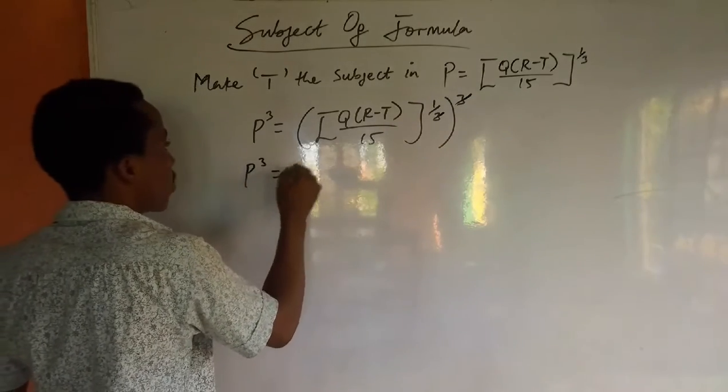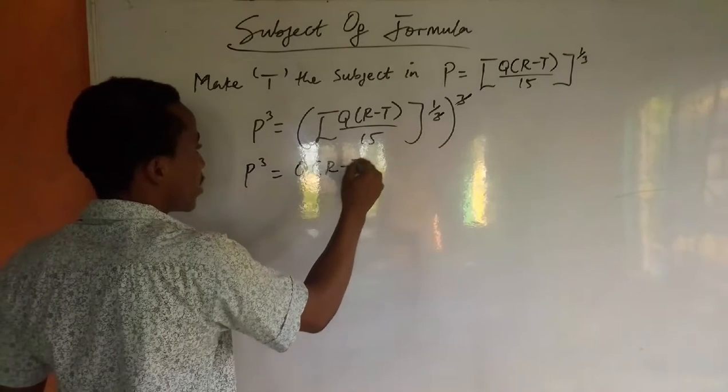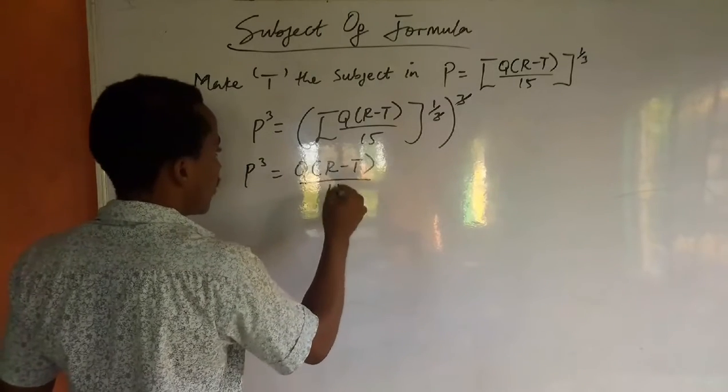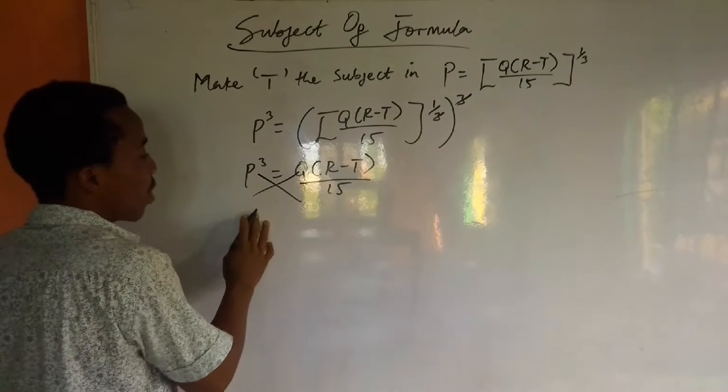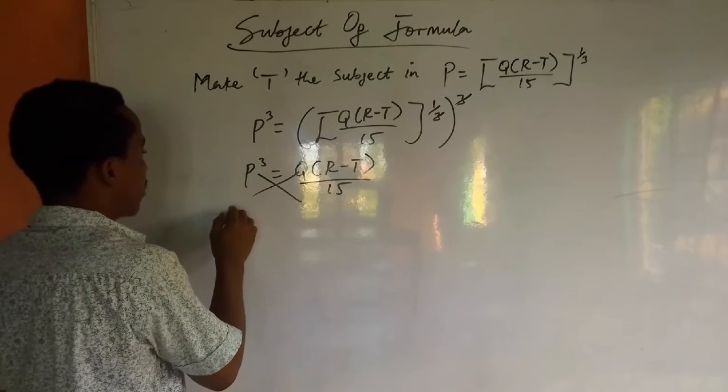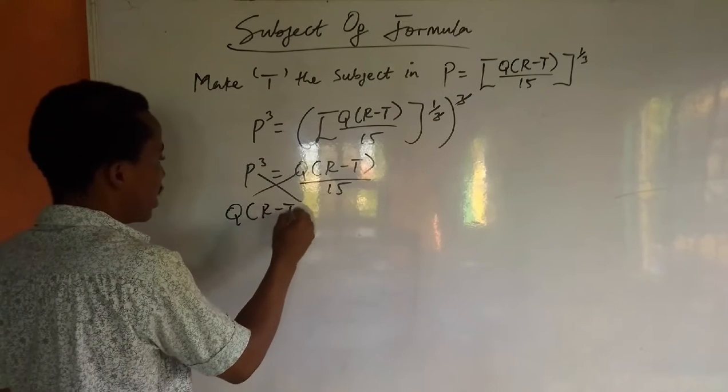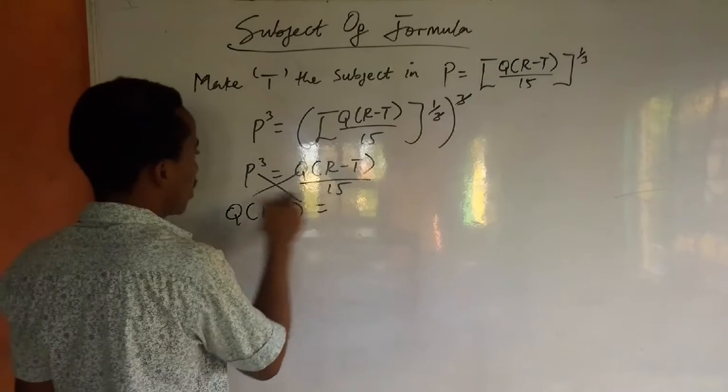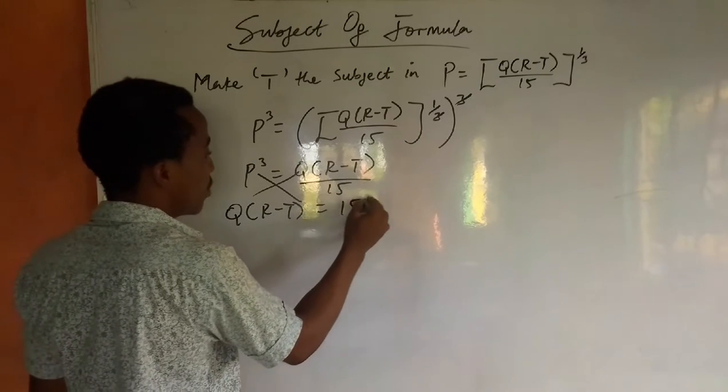And P³ will be equal to Q(R - t) over 15. We cross multiply. When we cross multiply, we have Q(R - t) equals 15P³.